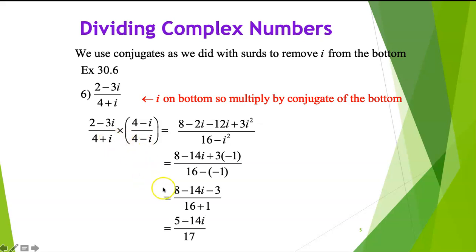So it will be 16 minus negative 1, which is 17. And then the top, you're just expanding the top normally, and you're simplifying it as possible by collecting the like terms, and that's your answer. So, the answer, you can see from the division that the denominator is a real number, and that's what you want to aim from the division, and that's why we use the conjugate. Thank you.